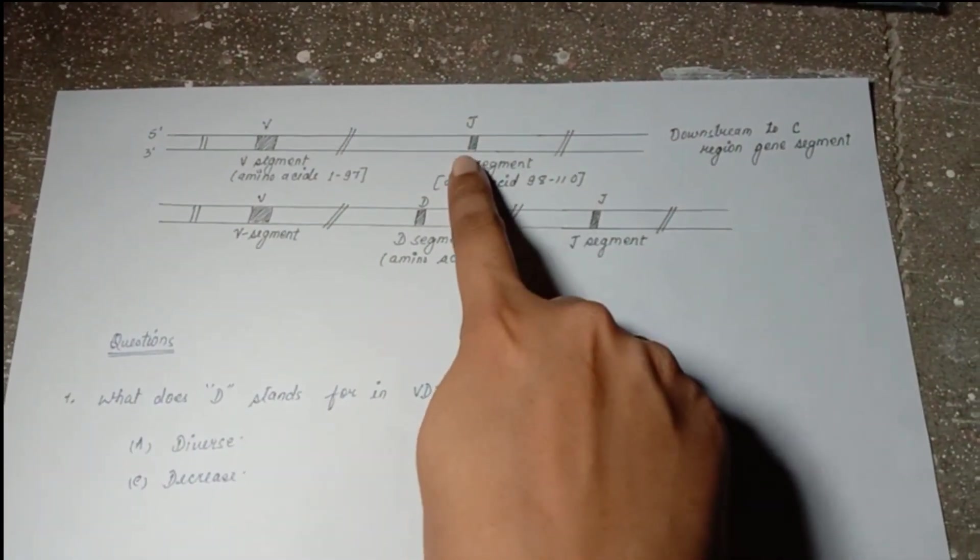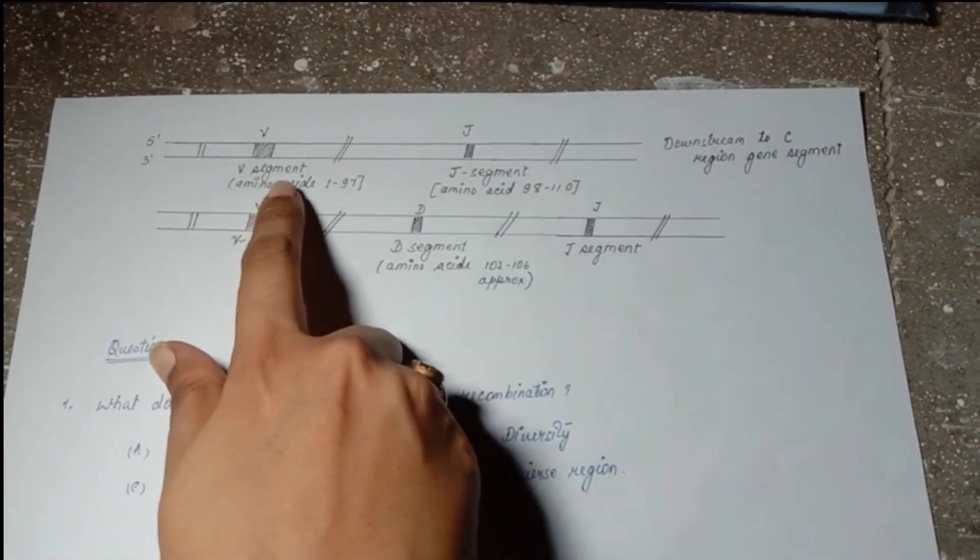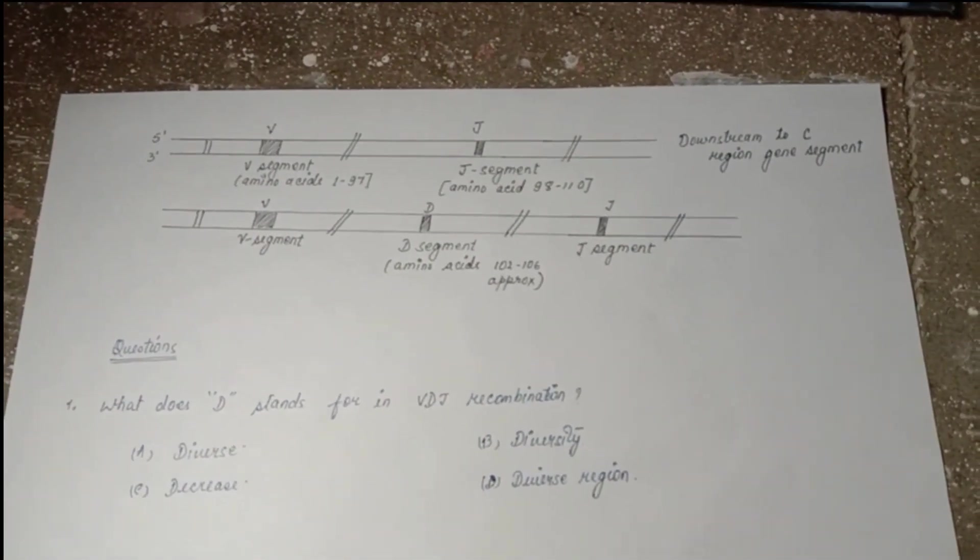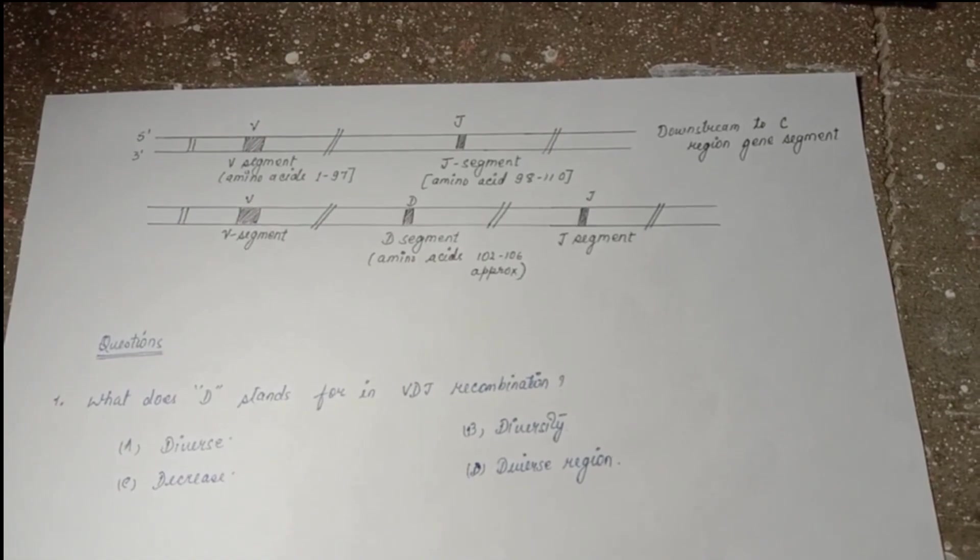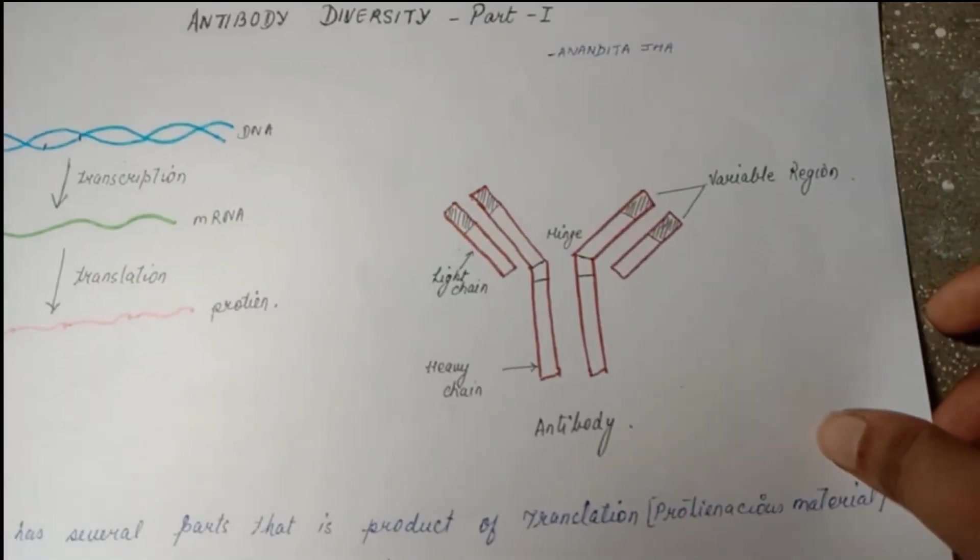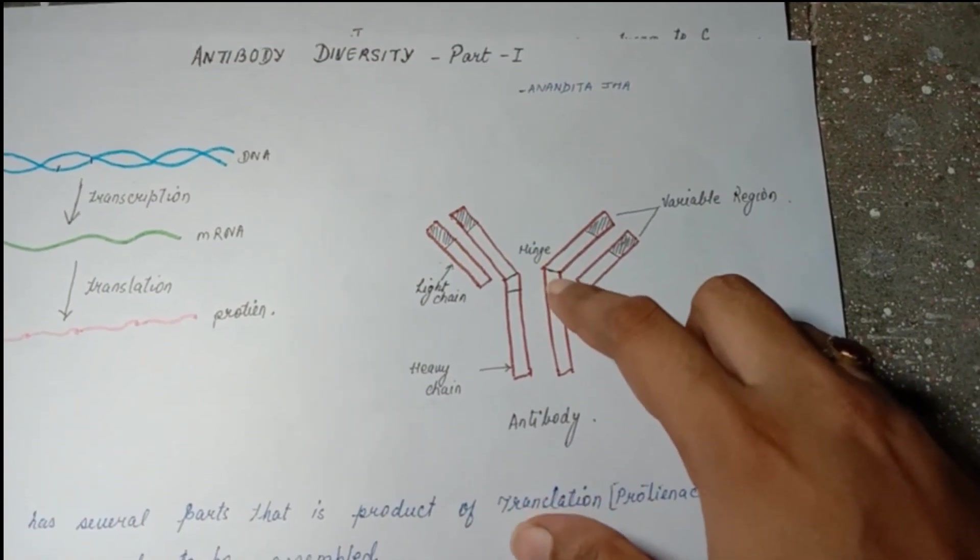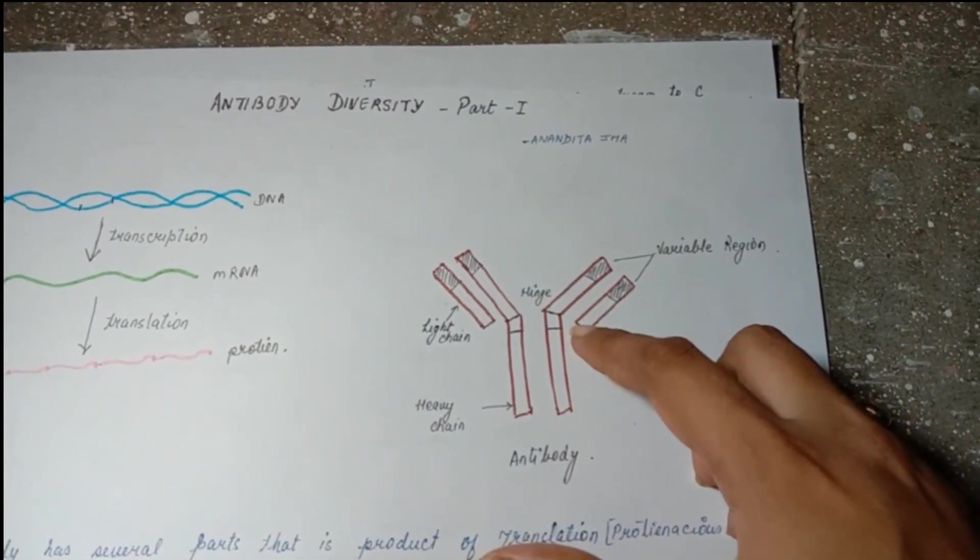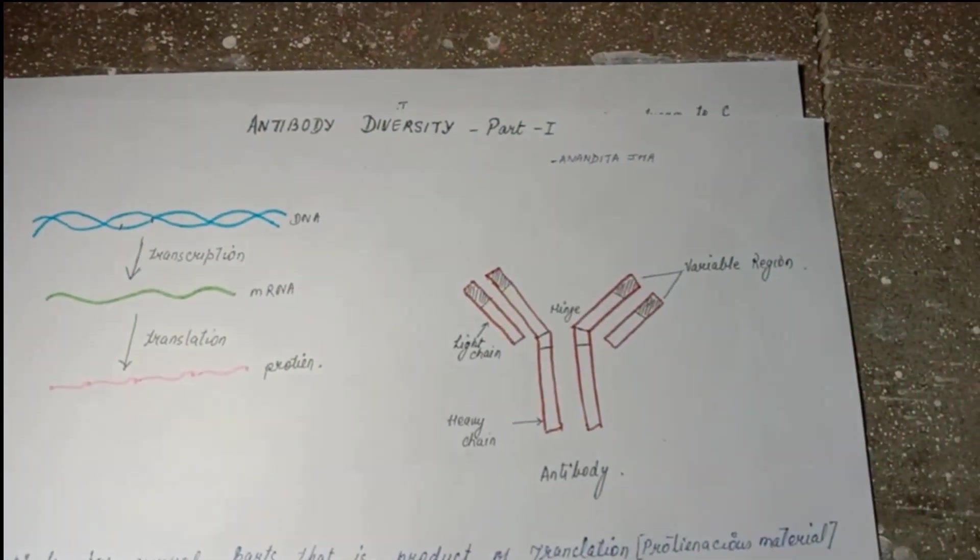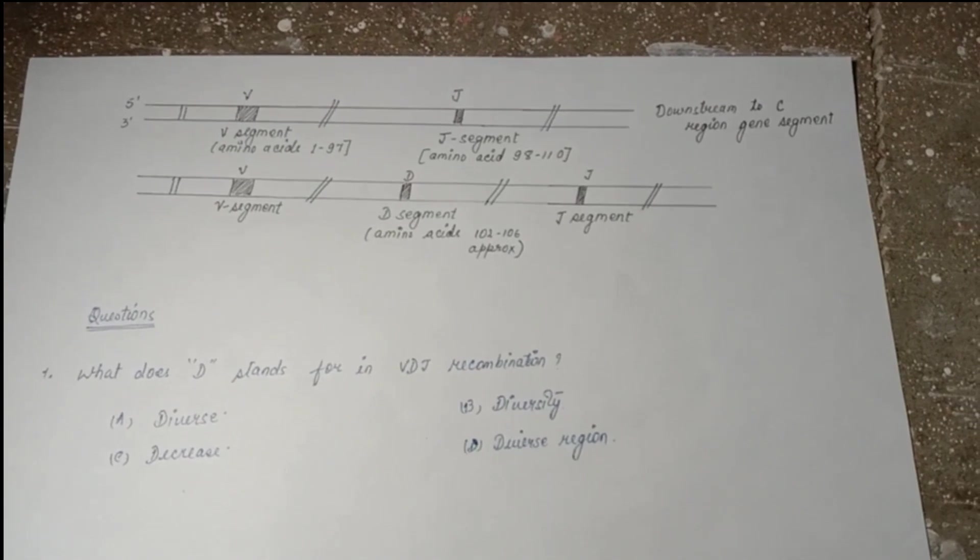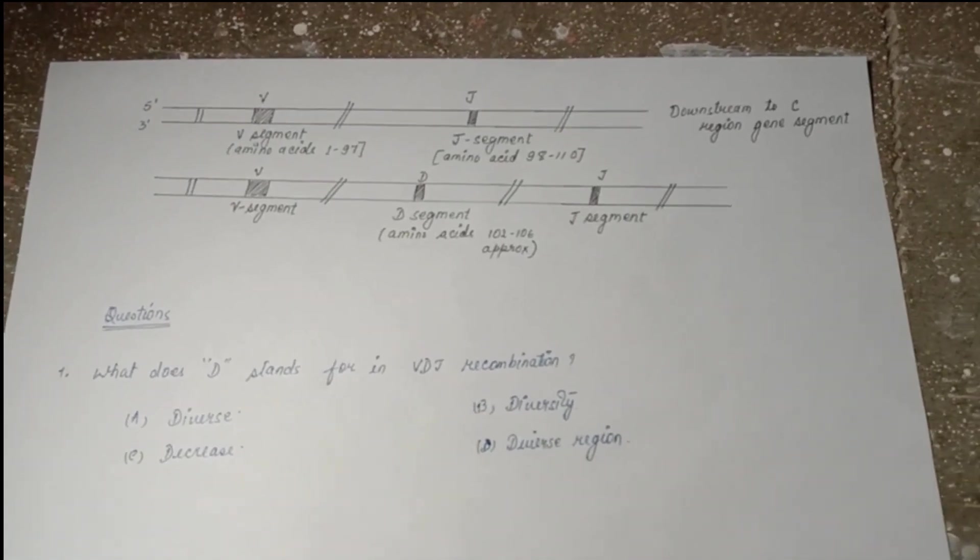This is the joining region of antibody. This is the variable region, and D is the diverse region responsible for the hypervariable region of the antibody. You can clearly see in the picture of antibody here: this hinge region is the joining region, this is the variable region, and this portion is the constant region for light and heavy both. So this is the gene segment that codes for these all things.